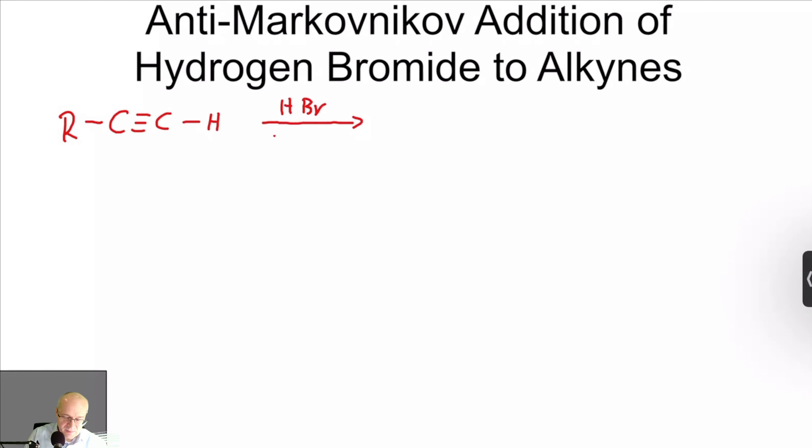Alkynes have triple bonds. So we're working with alkynes in this chapter. All right, so if you add HBr to an alkyne in an anti-Markovnikov fashion, you will indeed get the anti-Markovnikov product, but you will get a mixture of cis and trans. So you won't get it exclusively one or the other.